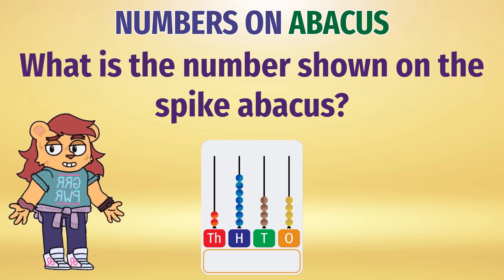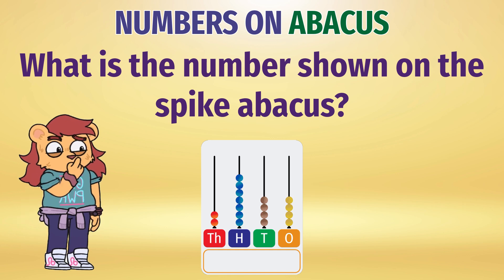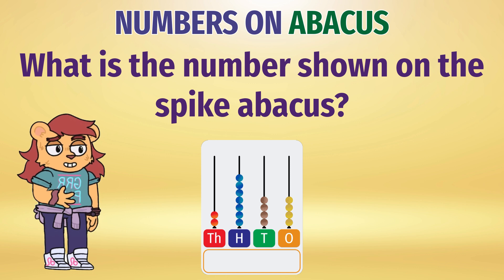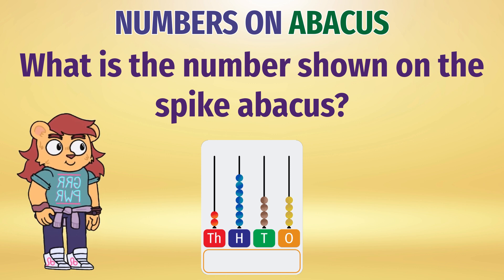A spike abacus has spikes representing place value. Count the number of beads on each spike to get the digit in each place value. Combine it and you have the number.